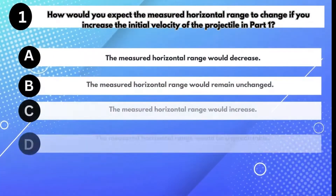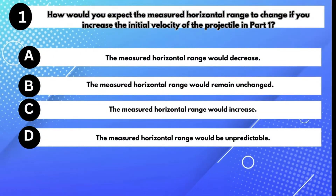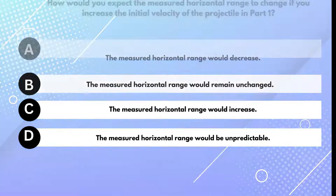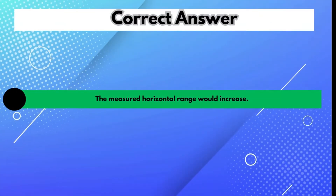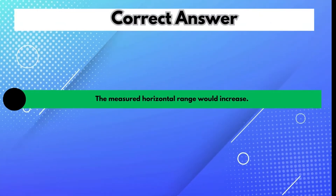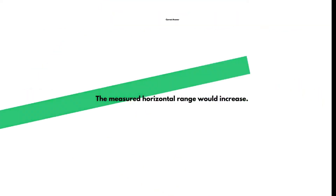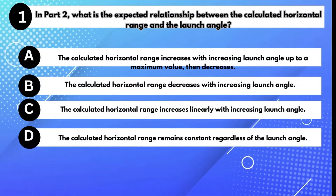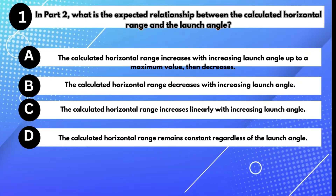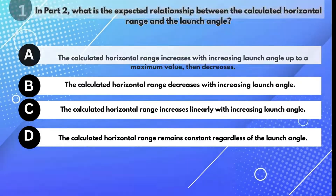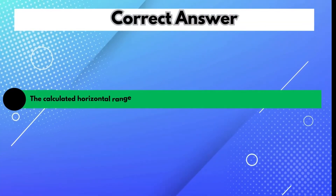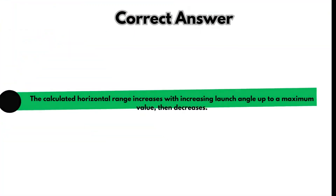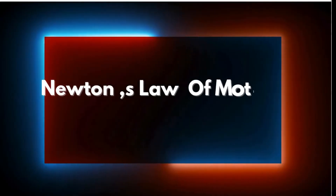How would you expect the measured horizontal range to change if you increased the initial velocity in part 1? Answer C: The measured horizontal range would increase. In part 2, what is the expected relationship between the calculated horizontal range and the launch angle? Answer A: The calculated horizontal range increases with increasing launch angle up to a maximum value, then decreases.